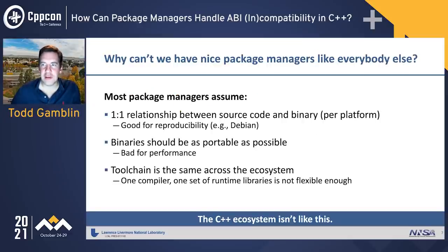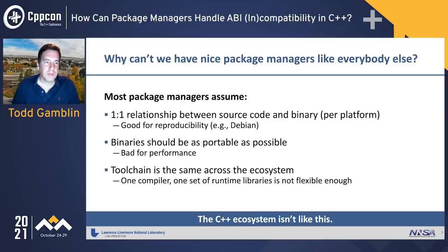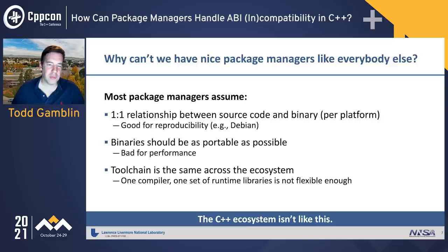So why can't we have nice package managers like other ecosystems? Rust has Cargo, Go has a module system with versioning that can easily fetch and build dependencies. Most package managers in those ecosystems assume a one-to-one relationship between source code and binaries on the platform. A distro package manager has one spec file that builds a portable binary, but that's not great for performance. In C++ we want to build something performant on the target architecture.